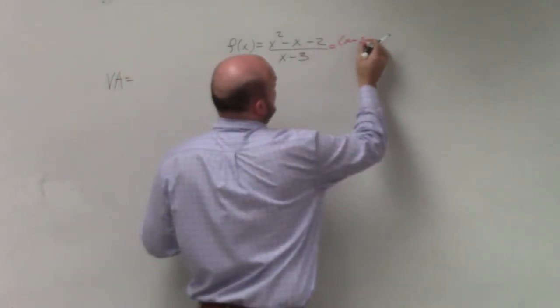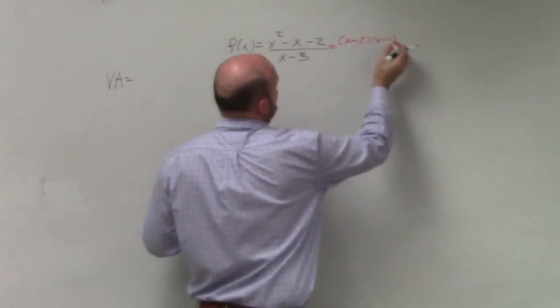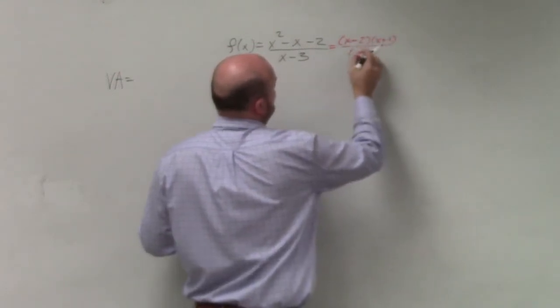This is going to be (x - 2)(x + 1) over (x - 3).